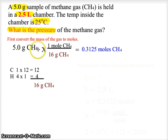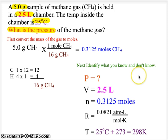Next we're going to list all of our values. The pressure is what we are looking for. The volume is 2.5 liters. The moles we just calculated is 0.3125 moles. The gas law constant is a constant, therefore it is always the same: 0.0821 atmospheres liters over moles Kelvin.